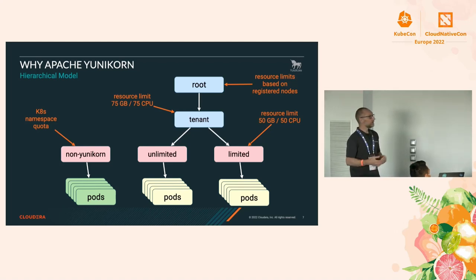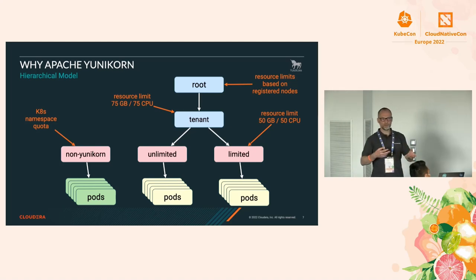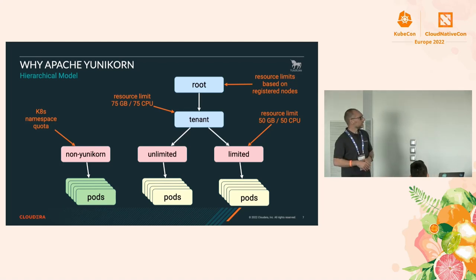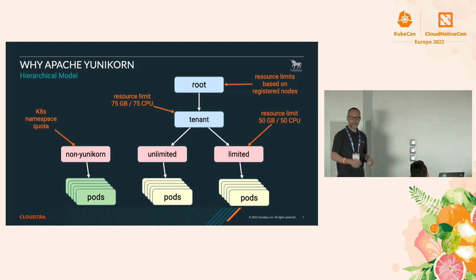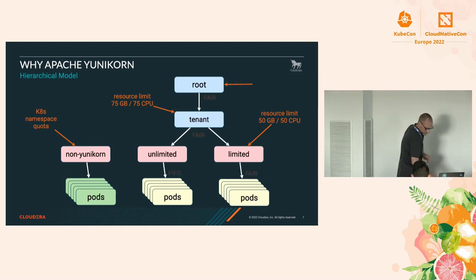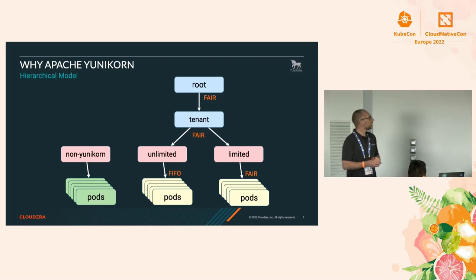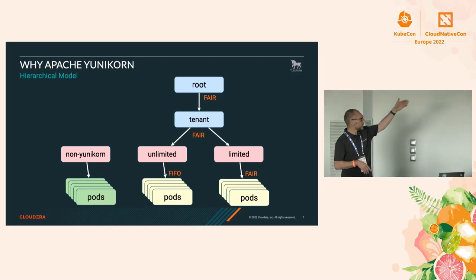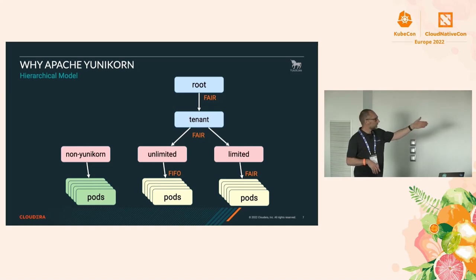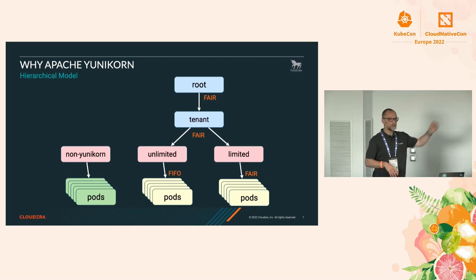How we share the 75 gigabyte limit from the tenant queue over the two child queues depends on the sorting algorithm set between them. If I do fair sharing, the quota gets nicely distributed over the two queues. If there's no load running in unlimited, limited will be able to pick up the full 50 gigabyte at maximum and gets limited at that point. We can set up different queue sorting algorithms - FIFO for the unlimited queue while doing fair sharing in the limited queue. The combinations are endless.